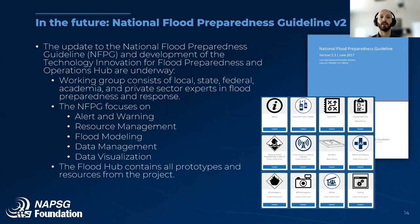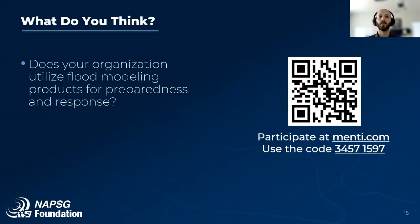The Flood Hub is in development and includes all prototypes and resources generated out of this project — items such as fire mappers, photo mappers, volunteer-led initiatives, sandboxes, and core information needs datasets all in one location. A big question on our mind is whether your organization utilizes flood modeling products for preparedness and response. Examples might be Hazus, the National Weather Model, or the U.S. Army Corps of Engineers Water Management System. We're interested to see what you're currently using — use the same Mentimeter link to answer.